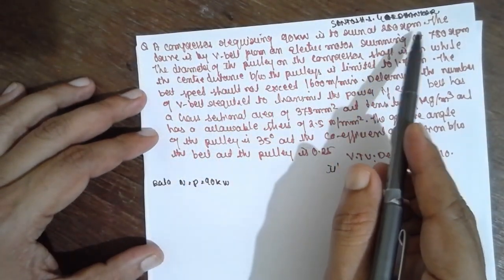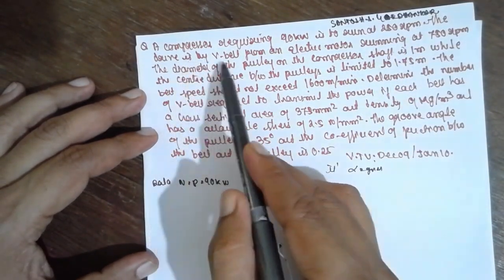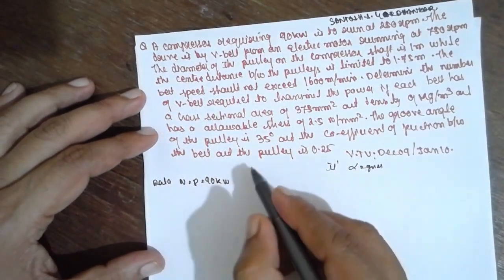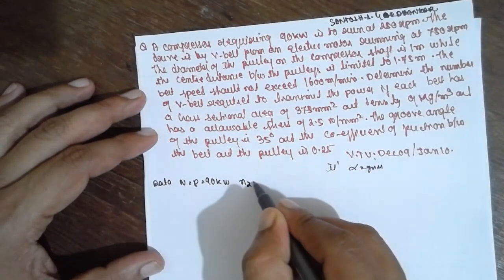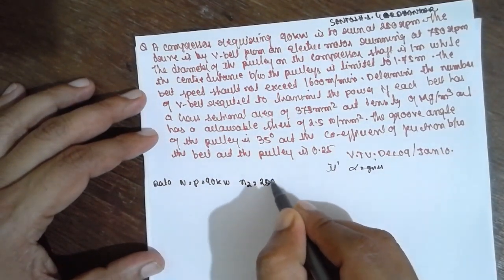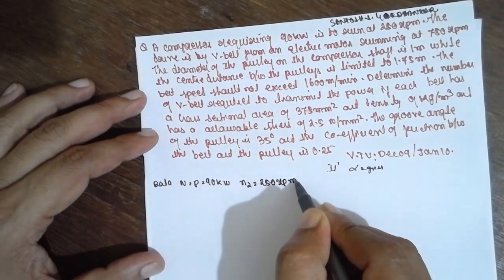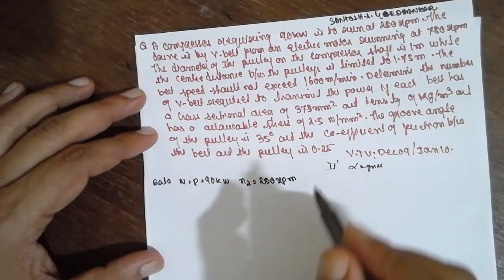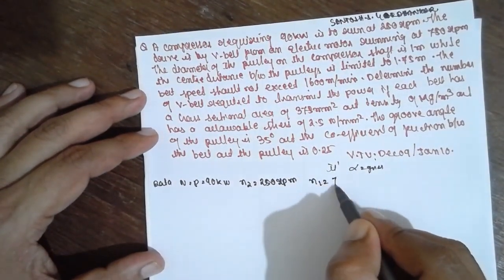The compressor is required to run at 750 rpm. Drive is V-Belt, therefore n2 they have given it here. It is a very tricky problem here, be careful. And n1 is 750 rpm.